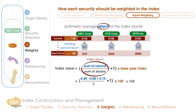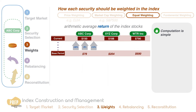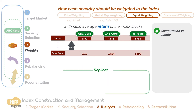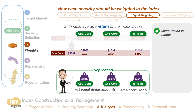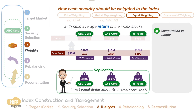As with a price weighted index, an advantage of an equal weighted index is its simplicity. To replicate the returns of an equal weighted index for a given time period, a portfolio manager would need to invest equal dollar amounts in each index stock such that the weight of each stock is equal. For example, if the portfolio has 30 million dollars to invest for this period, he would place 10 million dollars in each stock on the base period. With that amount, he buys the following number of shares and the weight of each stock in his portfolio is an equal 33.33% each.